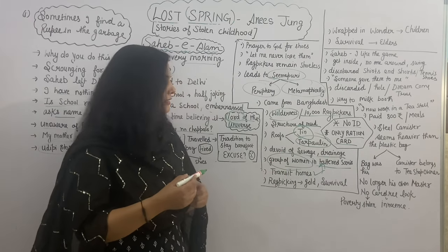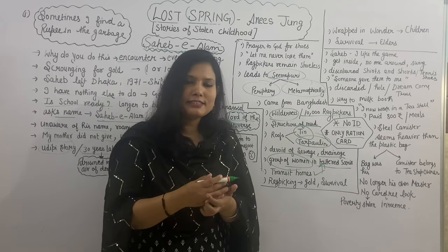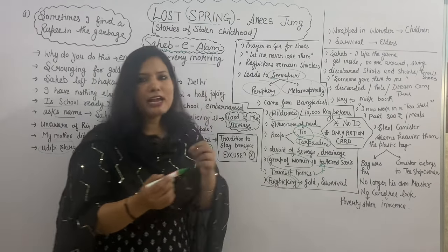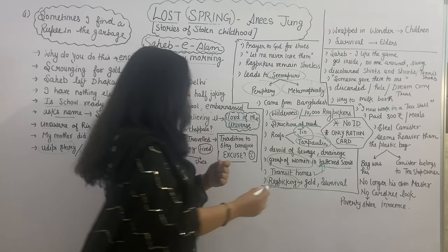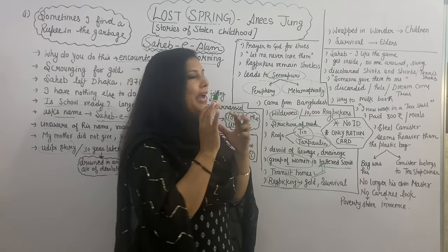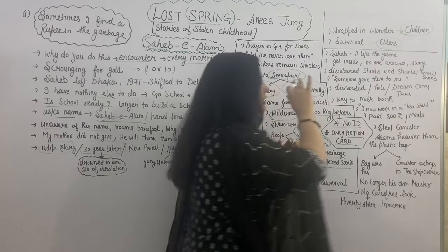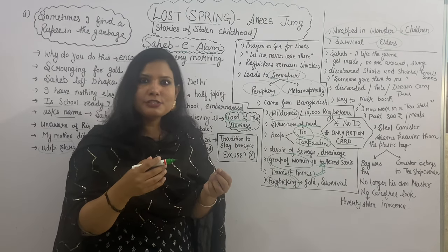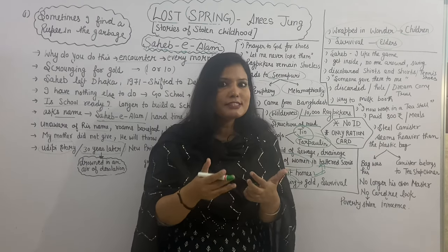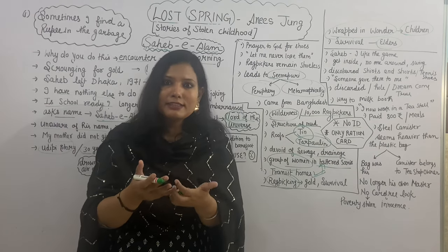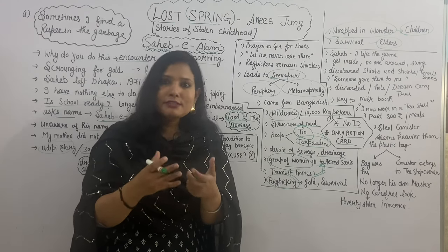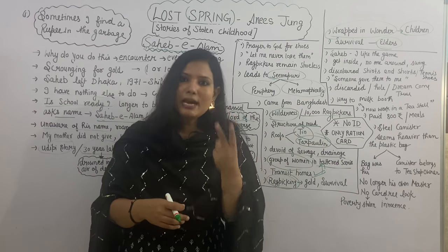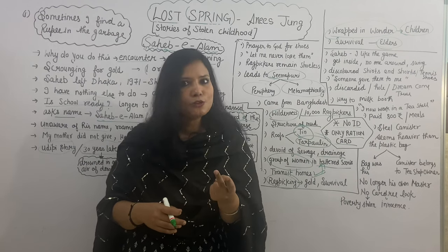Anees Jung tells us that wherever these people find food, they pitch their tents — that's how their home is quite transient, a temporary one; they are not settled people. Rag picking has two different meanings for different people. For the children, this garbage is wrapped in wonder — children are quite happy when they find new stuff. But for their parents, this garbage is just a means of getting daily bread and survival. So for children living in Seemapuri, garbage is gold wrapped in wonder, and for elders it is just the means of survival.